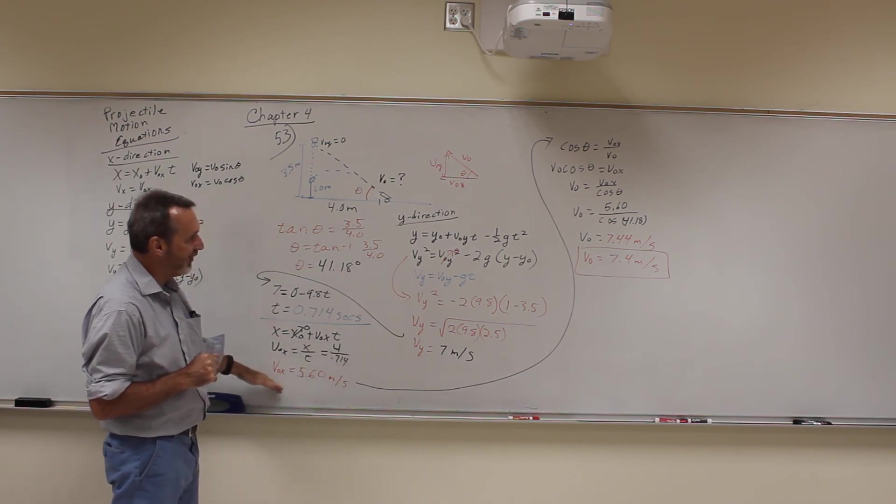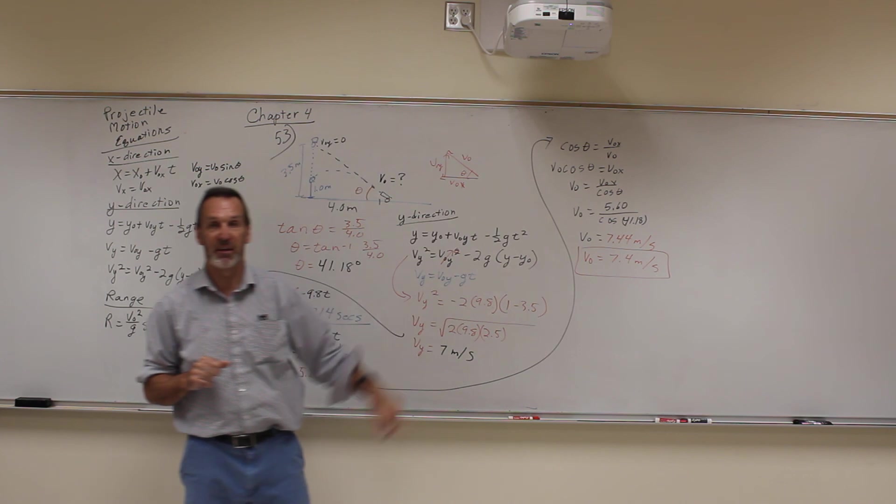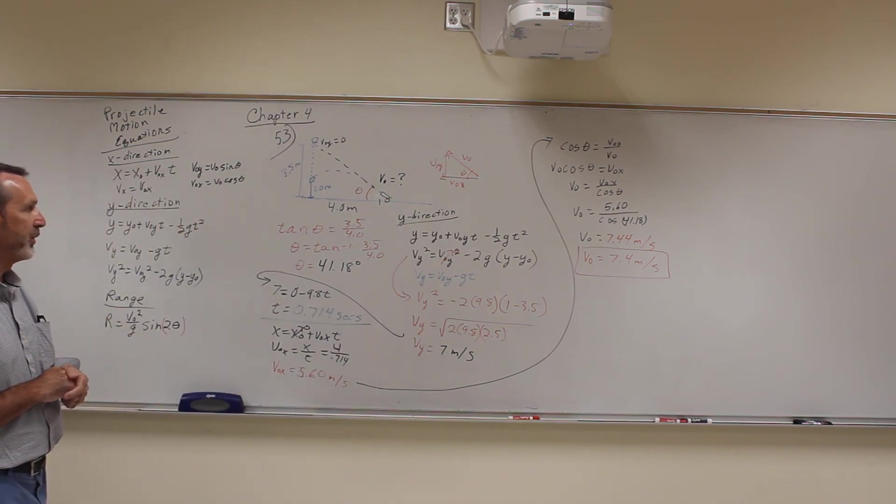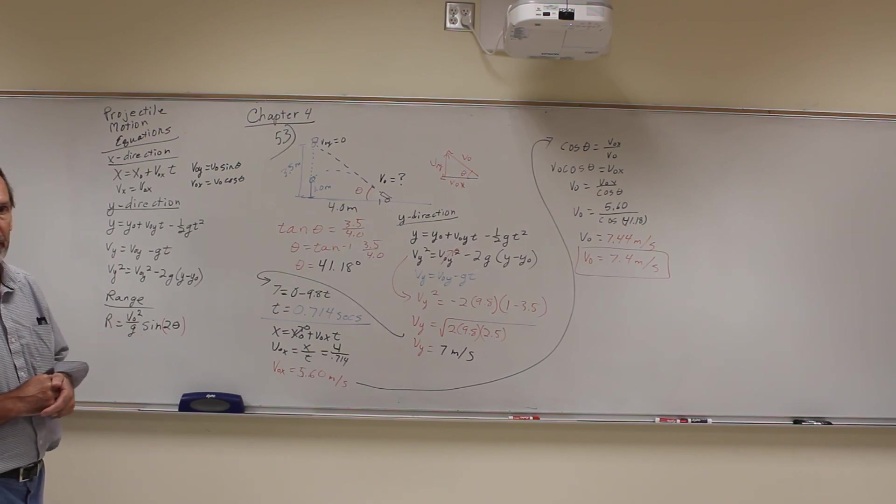I had to get this step to get the time. Once I had the time, I had to get this. Once I had this, I had to go this way to figure out what V0 is. So there are multiple steps, and that's the way, as the longer we go in the chapter and the longer in the semester, they're going to get more and more complicated like this.